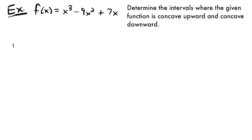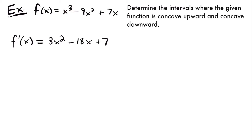So f prime of x, or the first derivative, is going to be equal to 3x squared minus 18x plus 7. If we take the derivative of each one of these terms using the power rule, this is what we will get.